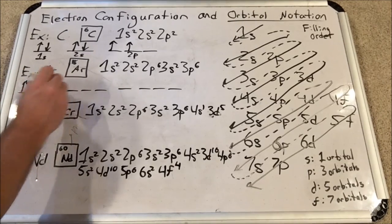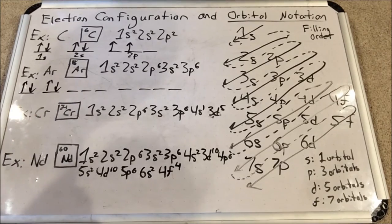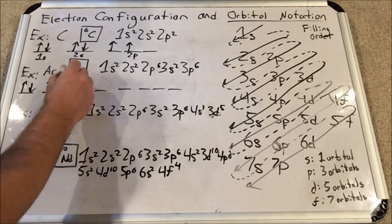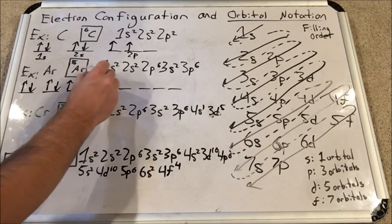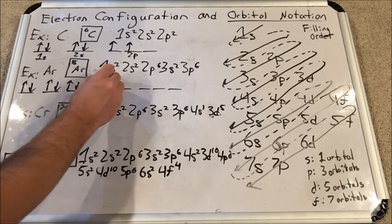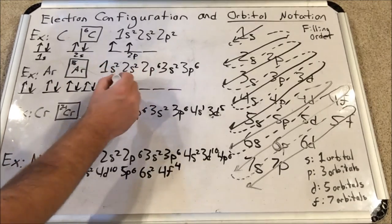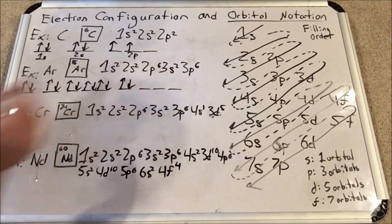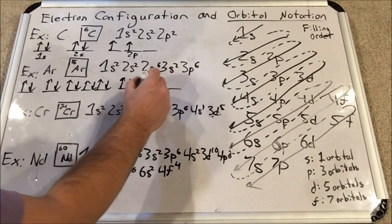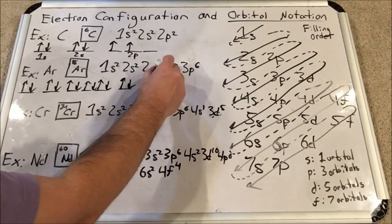So we're going to fill up first then down in each s. Notice I don't skip to the next s until the previous s is filled. Then I will fill 2p6, up first then the downs. Then I will fill 3s, then I will fill 3p6, all filled up. This is argon, completely done, completely filled.